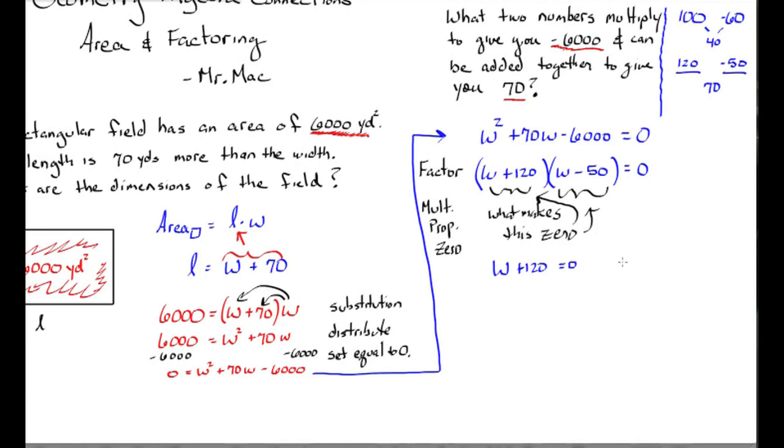So I can set this equal to zero and solve, and I get w equals negative 120 and 50. I'm going to throw out the negative number because width can't be negative, so it must be 50.